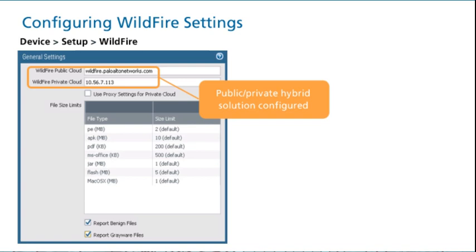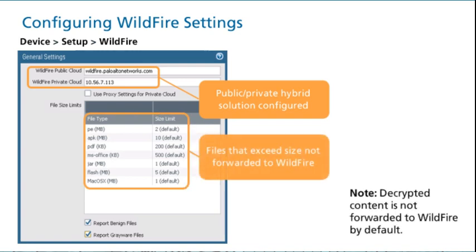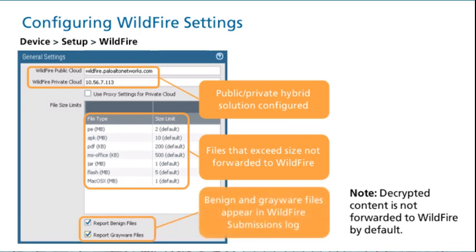If you have configured a WF500 private cloud appliance, enter its IP address or domain name as the value for Wildfire private cloud. You can also configure size limits for files forwarded to Wildfire for analysis. The default size limits can vary by PanOS version and the firewall model. Files larger than the specified size will not be sent to Wildfire. The report benign files and report grayware files checkboxes are not enabled by default. If you enable them, then Wildfire includes analyzed benign and grayware files in the report it returns to the firewall. A report appears as an entry in the Wildfire submissions log. Even if these two options are enabled, Wildfire will not report back to the firewall benign or grayware URLs analyzed within email, because the size of these reports could be prohibitively large.